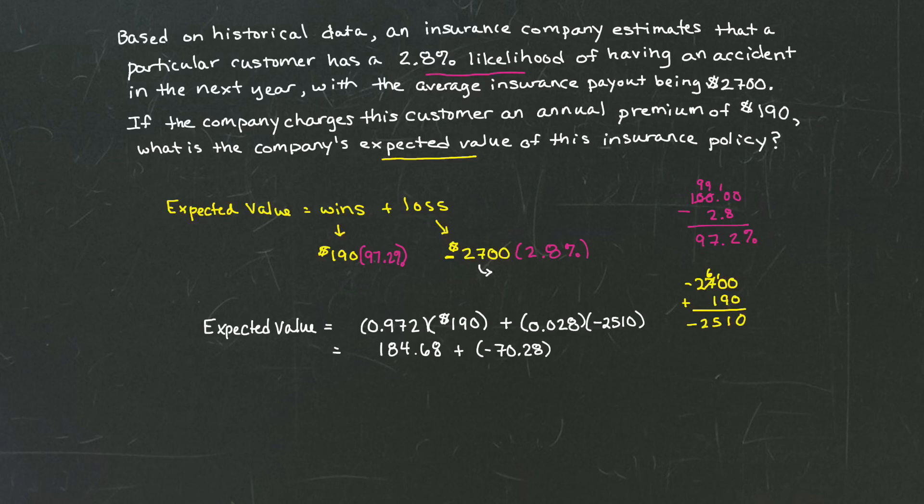When we combine those two values together, that means we have negative 70.28 added to 184.68. And that gives us a positive gain, or a positive expected value, of 114.4.